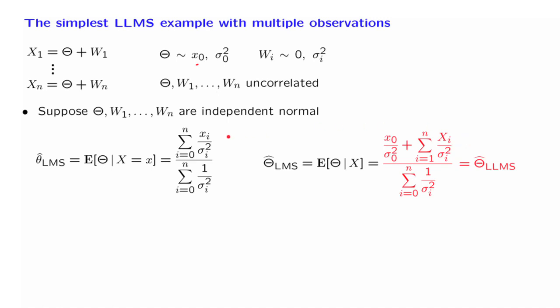So for the special case, where our random variables are independent and normal, we have a formula for the best linear estimator. Now, what if they are not normal? Suppose that they are not normal, but that they have the same means and variances as here, as in the normal example.